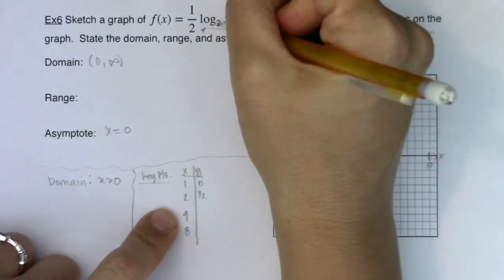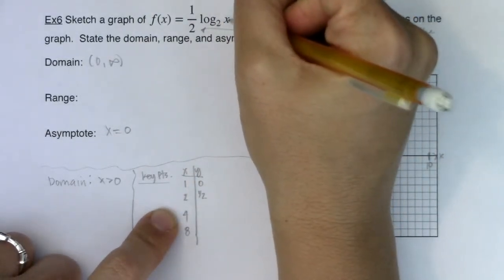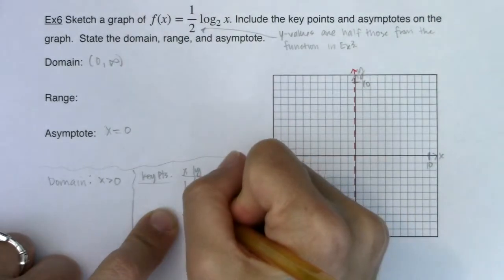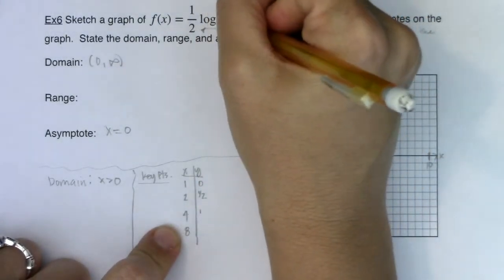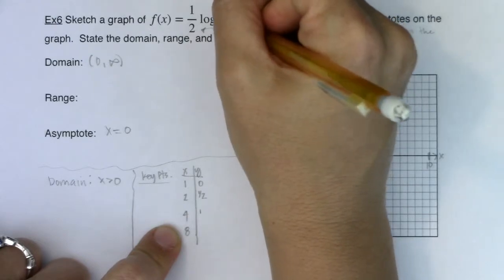For 4, log base 2 of 4 is 2. 2 times 1 half is 1. For 8, log base 2 of 8 is 3. 3 times 1 half is 1 and a half.